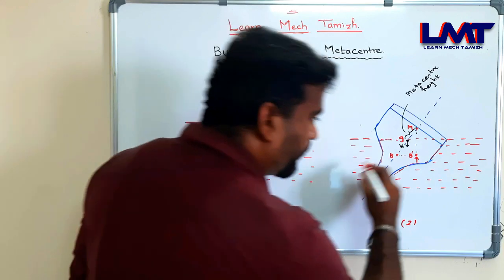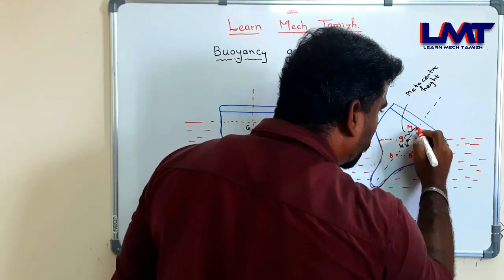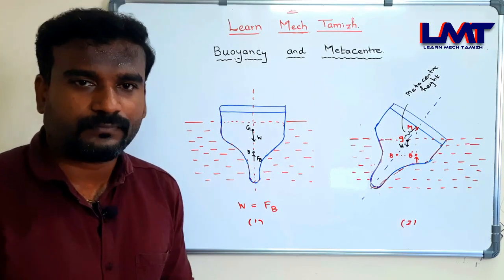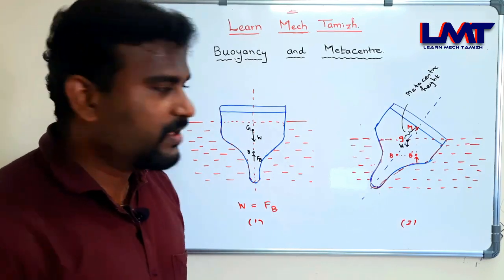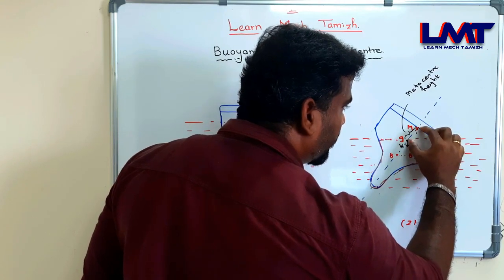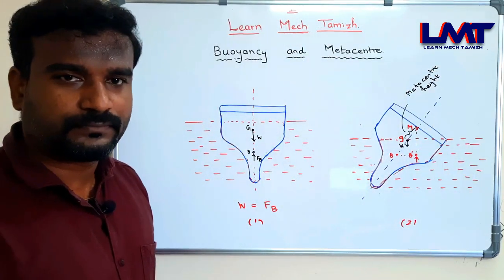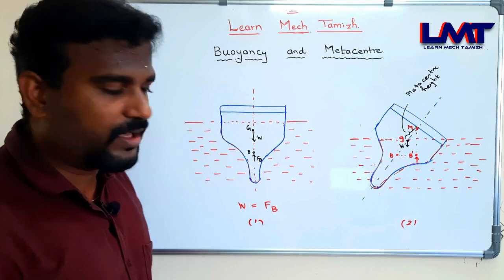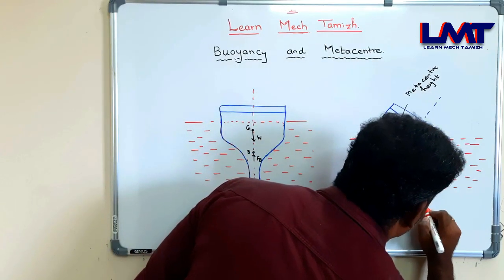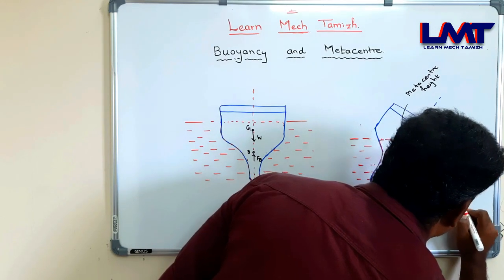We draw a vertical line through the new center of buoyancy upward. The point where this vertical line intersects the original centerline of the ship is called the metacenter M. The distance from G to M is called the metacentric height, denoted GM.